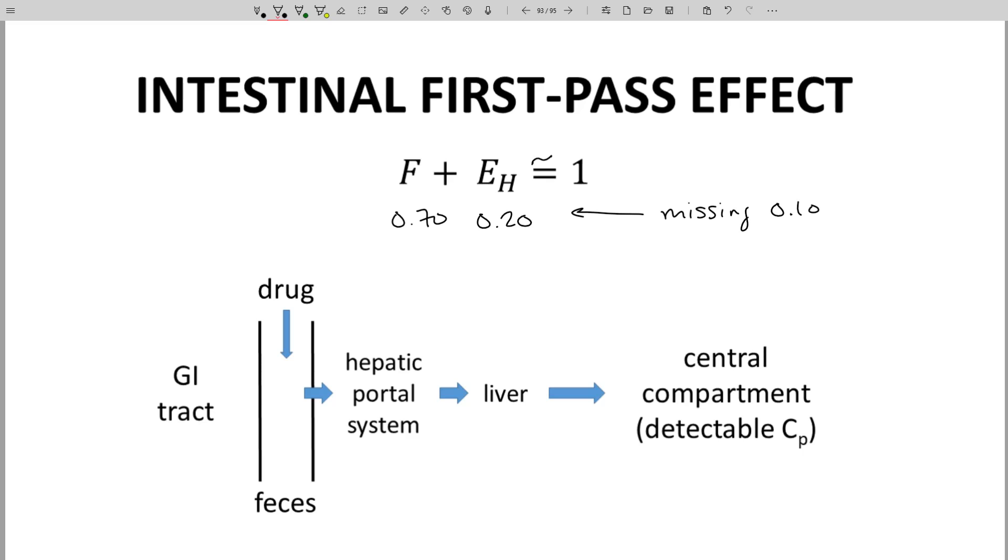On the left, that's 10% of our drug lost. What is happening? The problem is we are ignoring the lining of the small intestine.